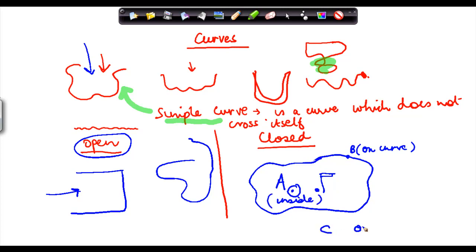And then there could be outside the curve. Let's say a point C. This particular area, which is covered by the curve, this entire area, is basically known as the region of the curve.